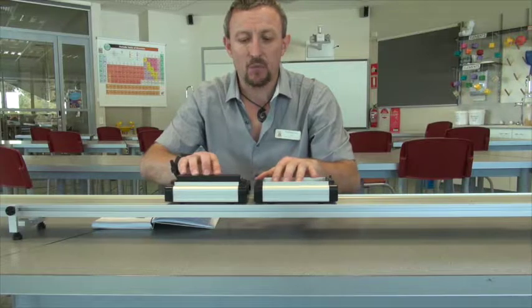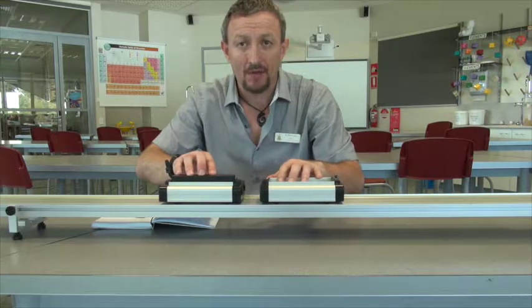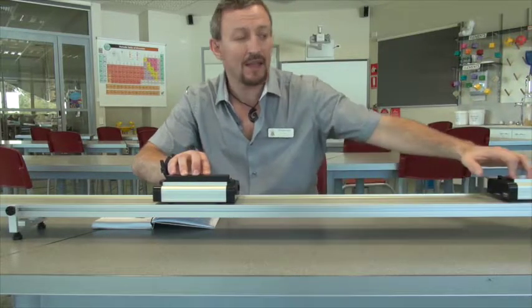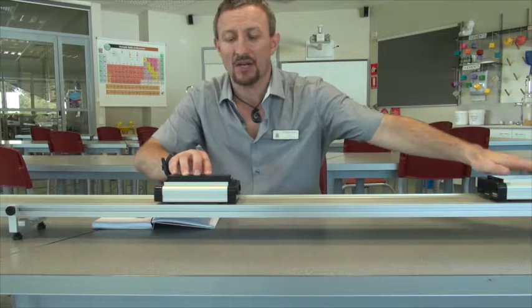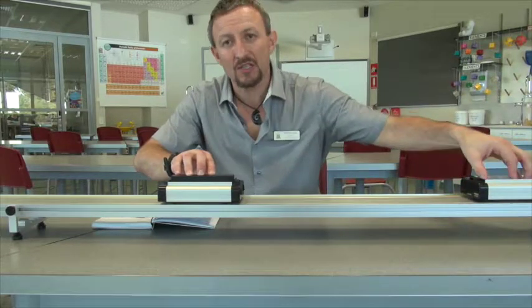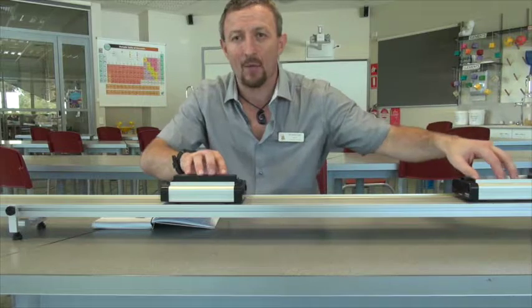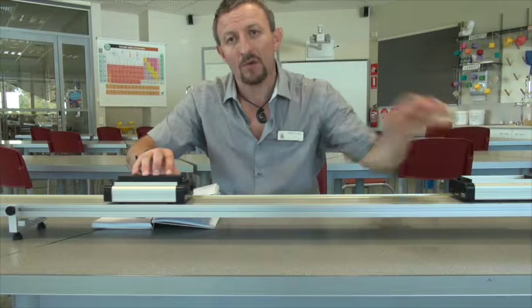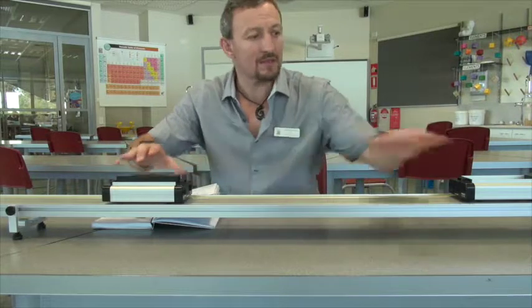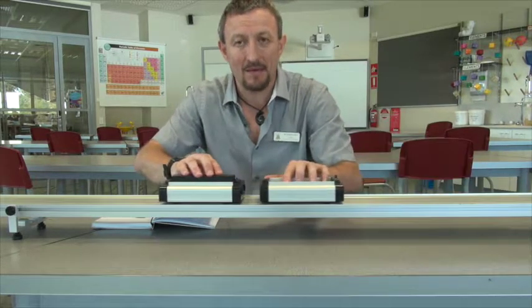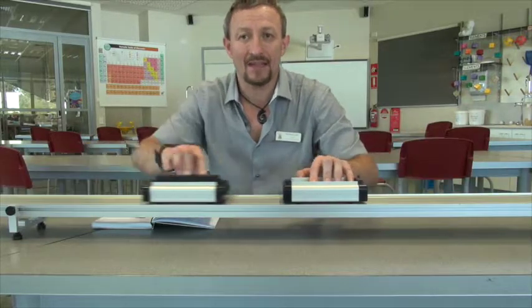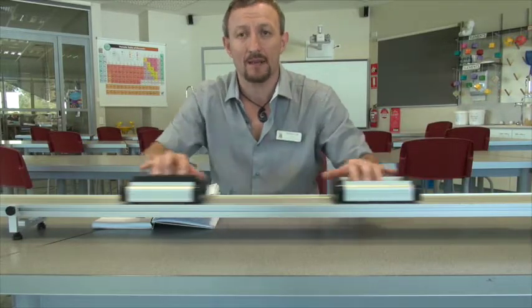Now what happens is when they rebound, this car goes off with a larger momentum. The mass hasn't changed because the velocity is increasing. However, this goes off with a lesser velocity. But if I was to add this momentum and this momentum as they rebound, it will equal the momentum of this car and this car coming in. So they're going to be the same.